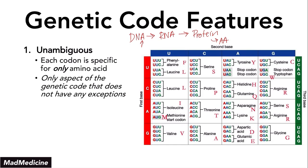UCU will always go to serine. UCC will always go to the amino acid serine. UCA and UCG always lead to serine. That is very important and that is the first concept you need to remember.